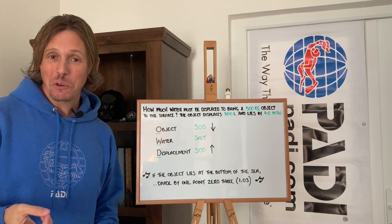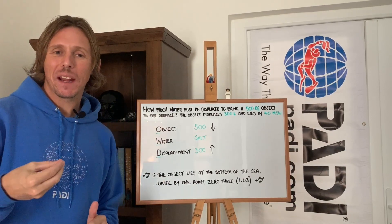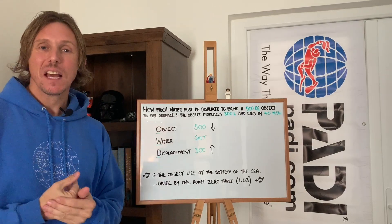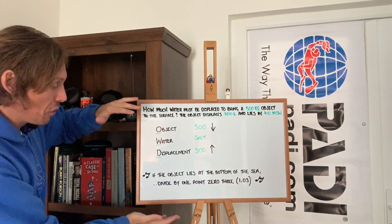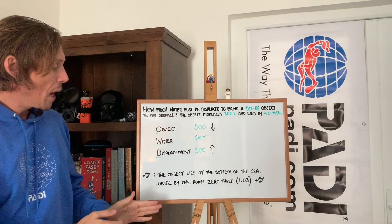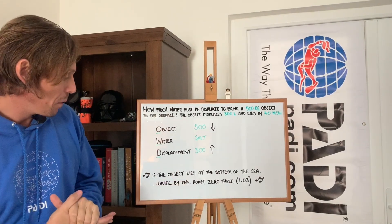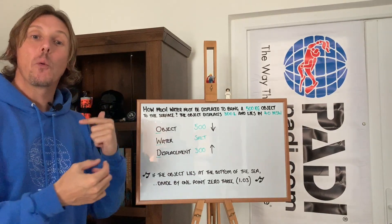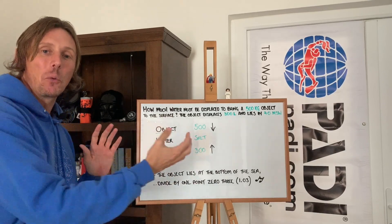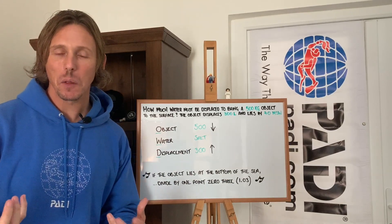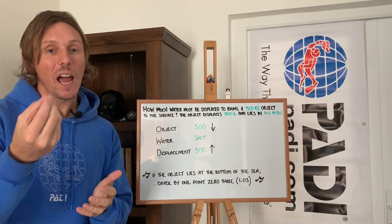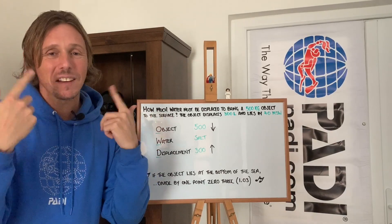I don't know if you know that nursery rhyme, but that's the tune I want to get into your head. All we really need to do now is change the lyrics. It's a screenshot moment. The new lyrics are: 'When an object lies at the bottom of the sea, divide by 1.03.' We sing that to the nursery rhyme tune but with these updated lyrics — hearing them helps get the tune in your head so it's easier to recall.